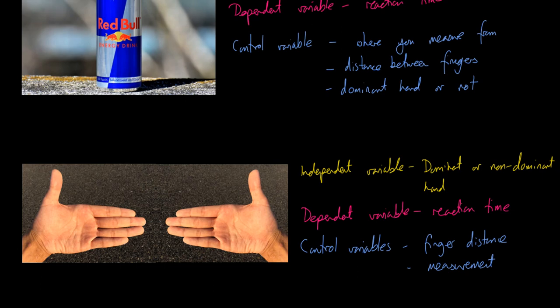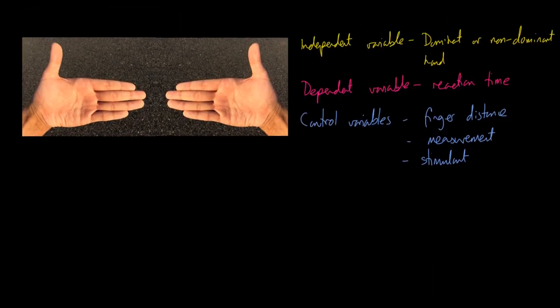But also now you've got to have stimulants—that's got to creep in because you're changing the hand that somebody is using. You are not changing whether they have a stimulant or not, so you can't give them a go with their dominant hand, let them drink a cup of coffee, and then let them have another go with their non-dominant hand. You've got to control it.